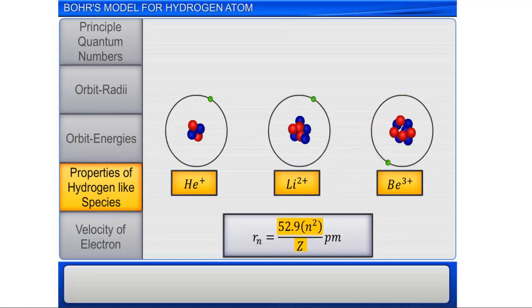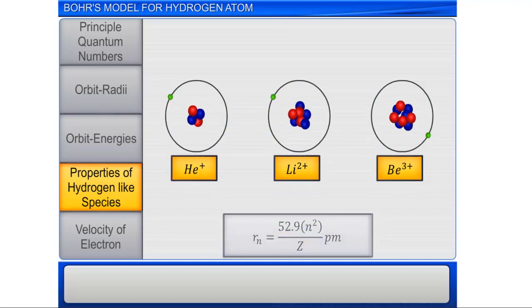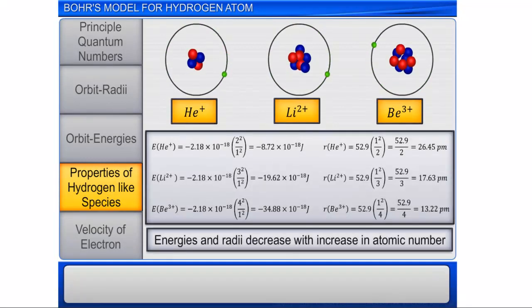From the orbit energies and radii equations of hydrogen-like ions, it can be deduced that with increase in Z, the value of energy becomes more negative, and the radius becomes smaller.